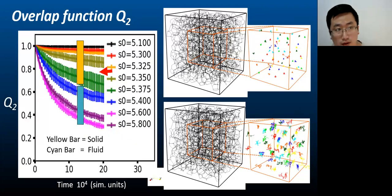We measure qn overlap function for the bulk system for different target shape indices. As shown in the figure, we observe that for low S naught, for S naught equals to 5.1, qn equals to 1, and it remains at unity throughout the duration of simulation.